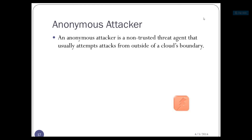All categories of attackers are non-trusted ones. But there are some intruders who are walking inside and know about the boundary, so they can even attack from inside. However, somebody who is outside, anonymous, who doesn't belong to that particular network and tries to attack from outside the boundary, is referred to as an anonymous attacker.